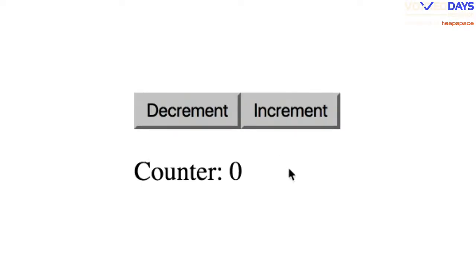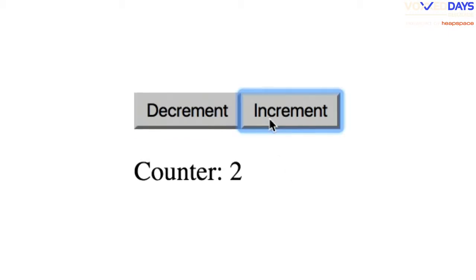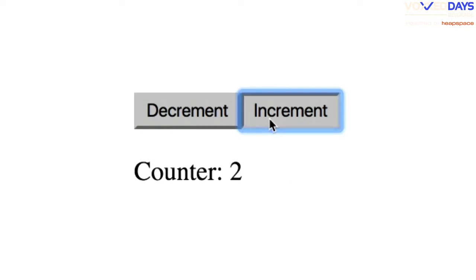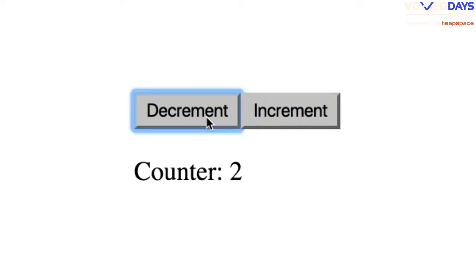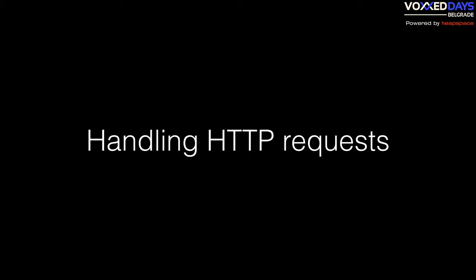So how does that work? You just click, and the streams are connected with the app. When you start clicking, data comes into the app, you transform it, and give that data back to the DOM as virtual DOM code. People always ask me how to use CSS with this virtual DOM library — it's really simple. Where you have a button, you send a second argument as a style object, specifying background color, height, and that's it.